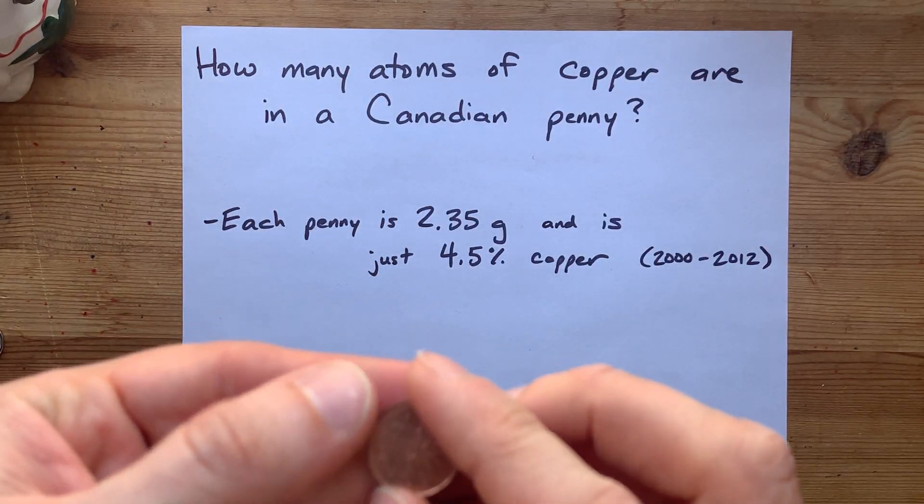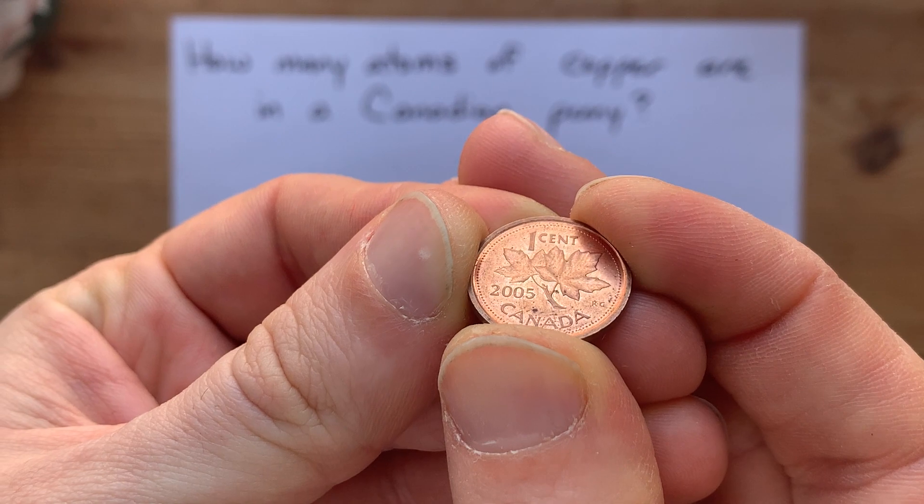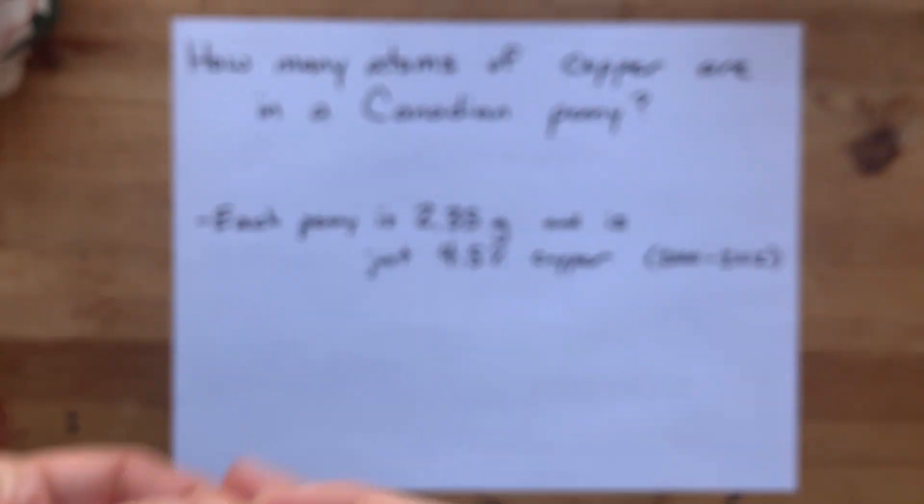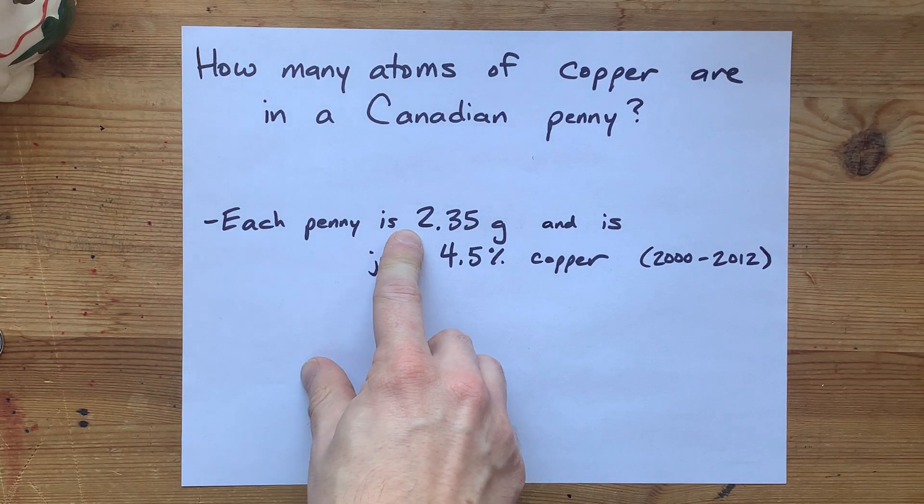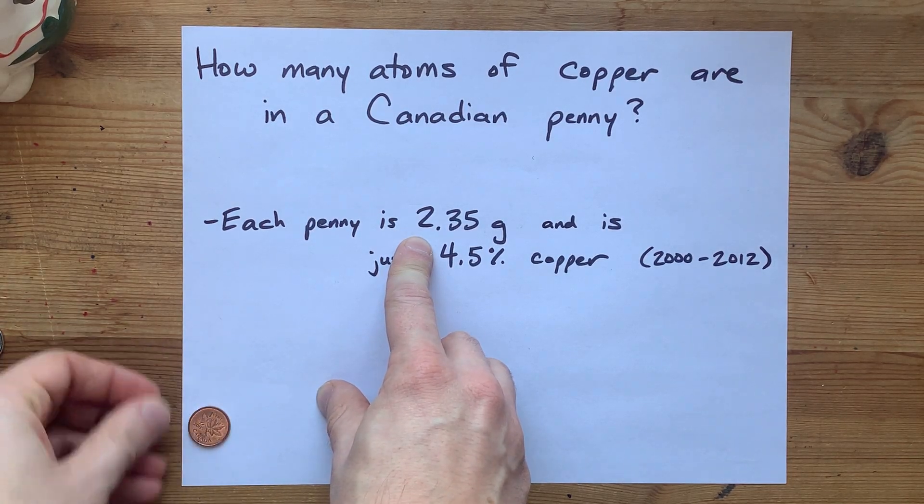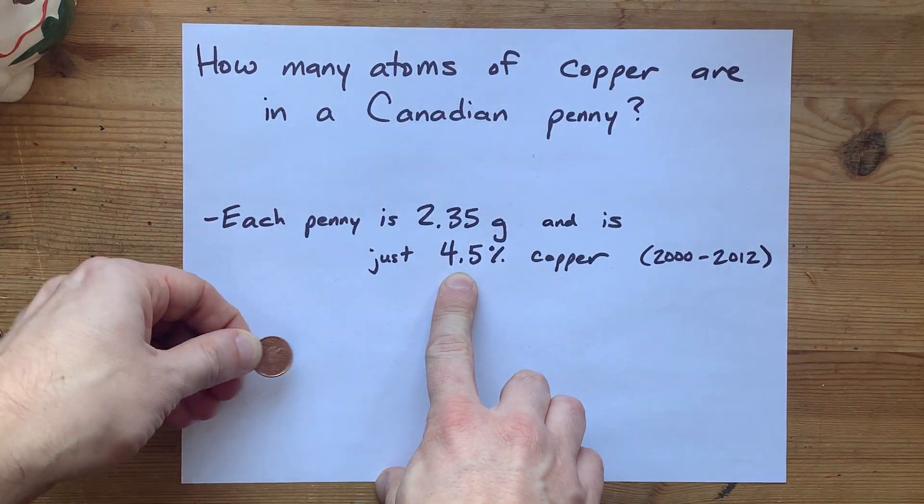A penny is a copper coin worth $0.01. This one's from 2005. They don't make these anymore. So it's probably about 2.35 grams. And unfortunately, even though it looks like a copper coin, it's only 4.5% copper.